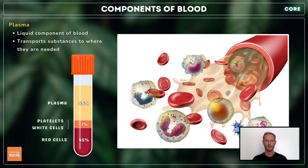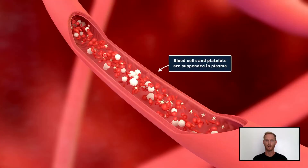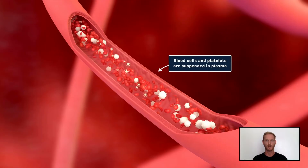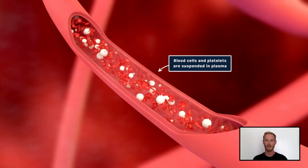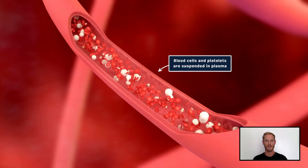The liquid component of the blood is called plasma. It's made predominantly of water and makes up around 55% of total blood volume. Because it flows easily, the main function of plasma is to transport mineral ions, carbon dioxide, nutrients, hormones, antibodies, urea, and the other components of blood to where they're needed.